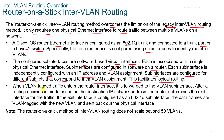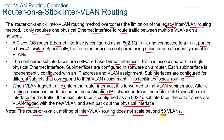When VLAN-tagged traffic enters the router interface, it's forwarded to the VLAN sub-interface. After a routing decision is made based on the destination IP, the router determines the exit interface. If the exit interface is configured as 802.1Q, the data frames are VLAN-tagged with the new VLAN and sent back out the physical interface. Note that the Router on a Stick method of inter-VLAN routing does not scale beyond 50 VLANs.